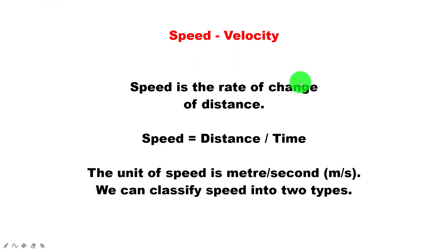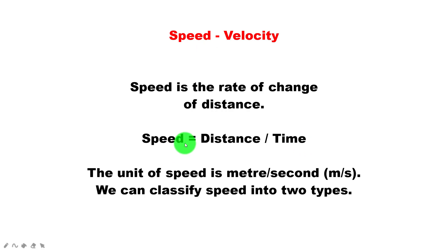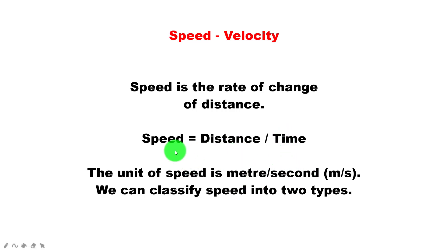Speed is the rate of change of distance. Speed is mathematically expressed as: speed equals distance divided by time. The SI unit of distance is meter and time is second, so the SI unit of speed is meter per second.